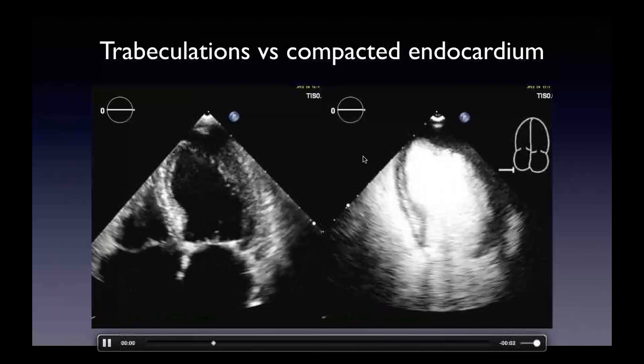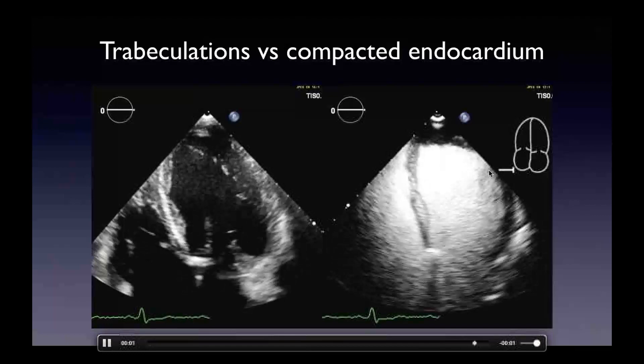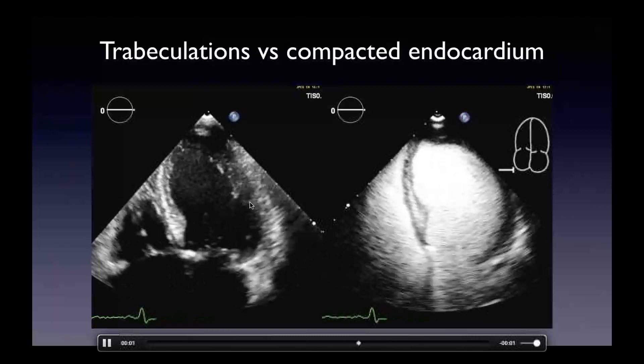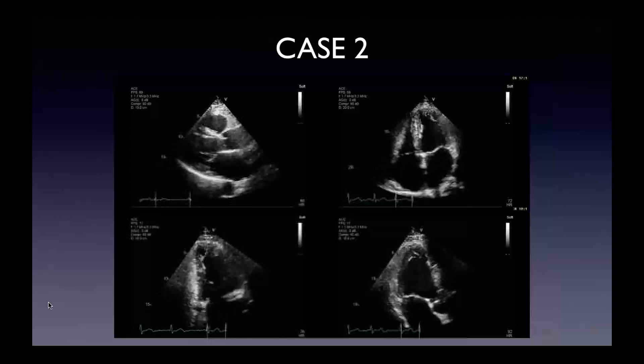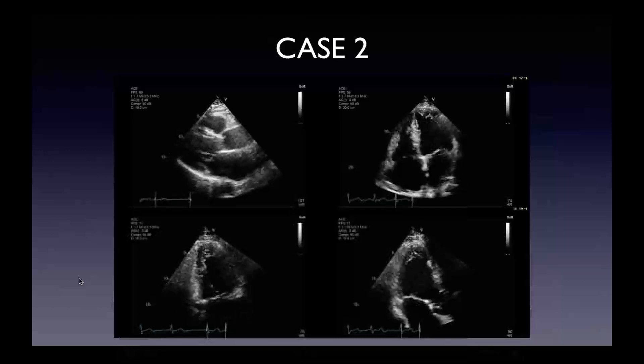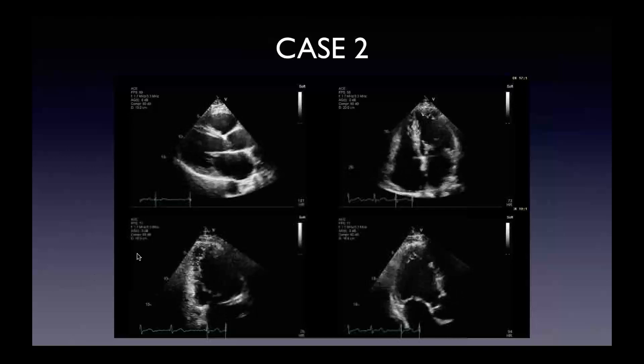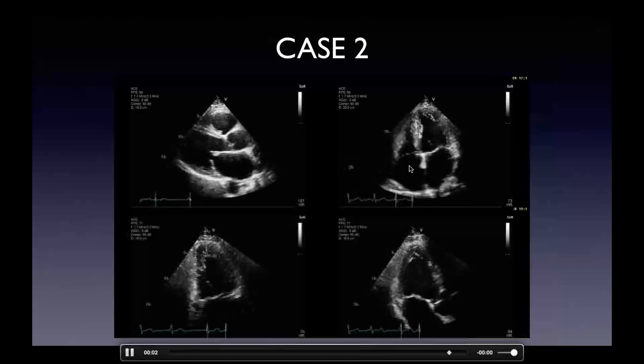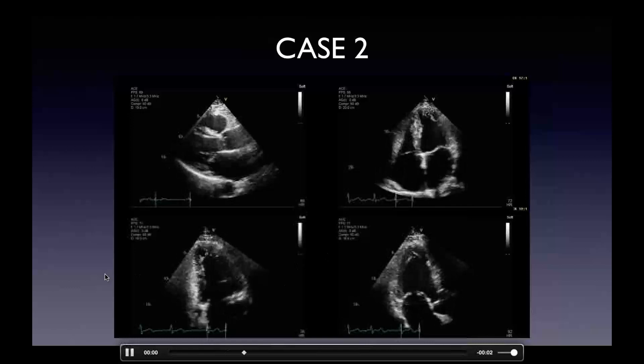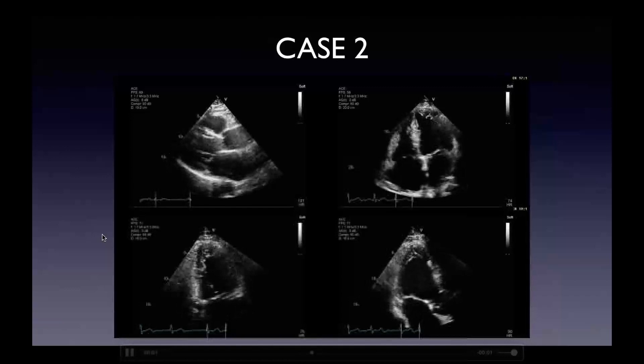You can get a hint of the trabeculations, which potentially has value for looking at non-compaction. You can recognize from the contrast image that the compacted endocardium is here, not at the outer trabeculations. Here's another case — parasternal long axis, apical four, two, and three-chamber views — where the LV EF is clearly abnormal, appearing global with regional variability. There might be some dyssynchrony such as bilateral or non-specific conduction delay. Foreshortening of the apical three-chamber view and probable trabeculations will make this challenging — this is the type of study where I would recommend using ultrasound enhancing agents.